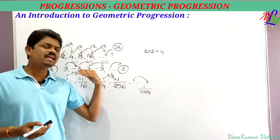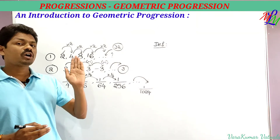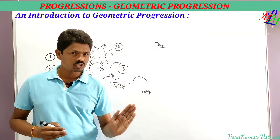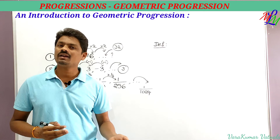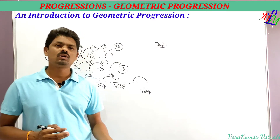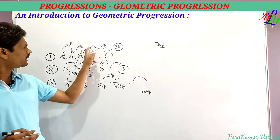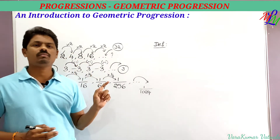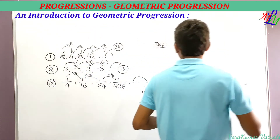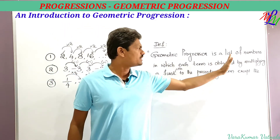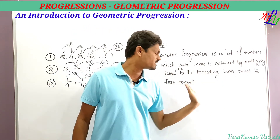Based on these series, we can now define geometric progression. A geometric progression is a list of numbers in which each term is obtained by multiplying a fixed number to the preceding term, except the first term.